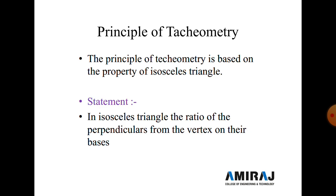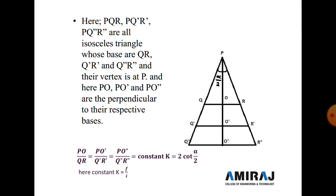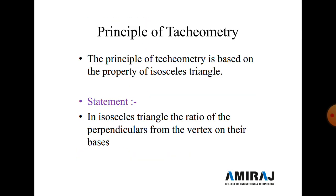The principle of tacheometry is based on the property of the isosceles triangle. The statement is: in an isosceles triangle, the ratio of the perpendicular from the vertex to the base is constant.